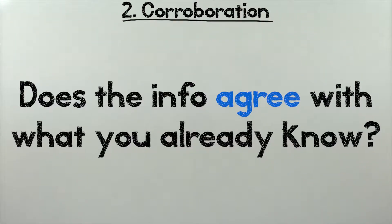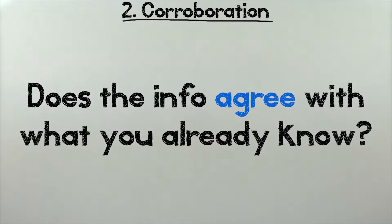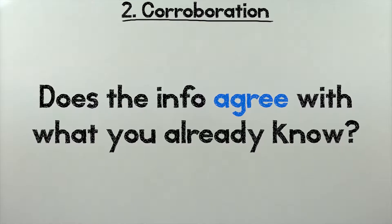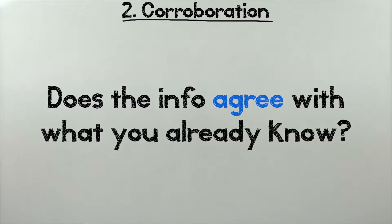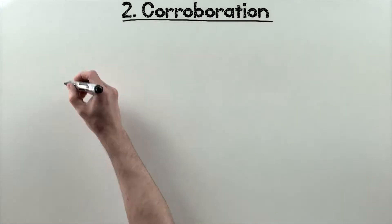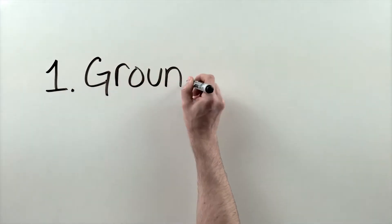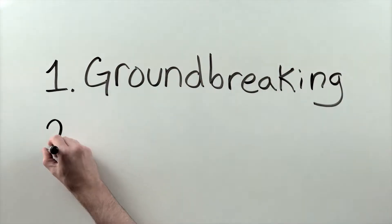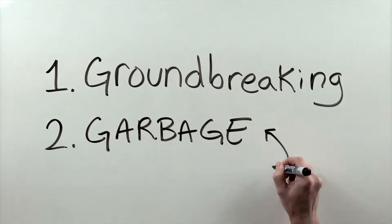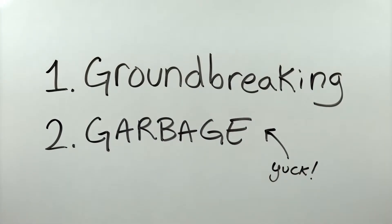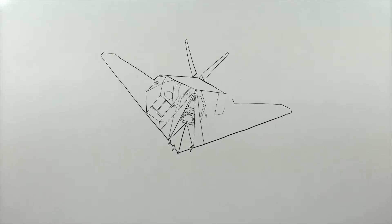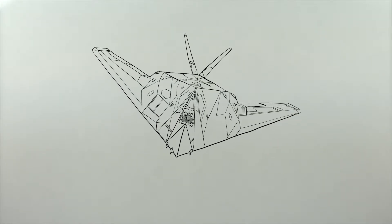2. Corroboration. Does the information agree with what you already know or with other documents you've found? If not, it warrants a closer look. Information that stands out like that usually belongs to one of two extremes: one, it's groundbreaking, like when the polio vaccine was discovered; or two, it's garbage, like Holocaust denial. Real groundbreaking research doesn't stay isolated because lots of people start using it in their own research. Garbage, however, tends to get ignored.